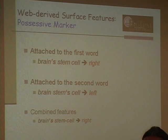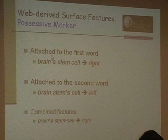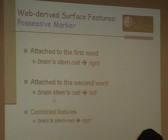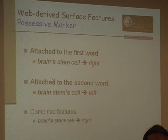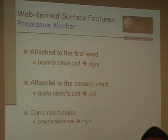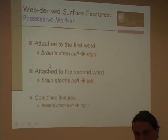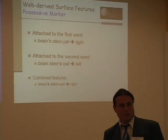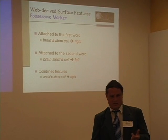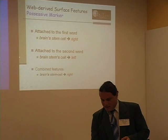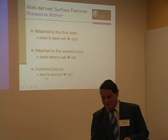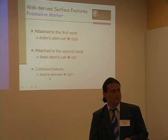Another surface feature is the possessive marker. For 'brain stem cell,' which is ambiguous between left and right bracketing, finding 'brain stem's cell' elsewhere tells you stem cell go together, while 'brain stems cell' suggests the left words are together. These features are not deterministic but provide probabilistic evidence. Features can also co-occur, such as having both a dash and a possessive marker, as in 'brain-stem's cells.'